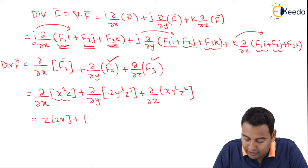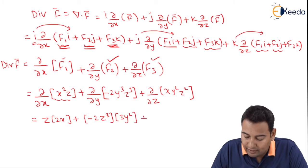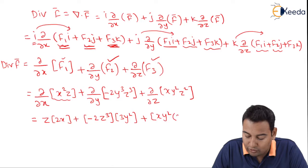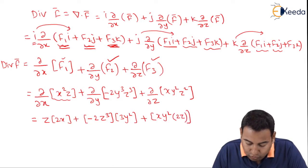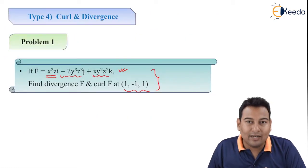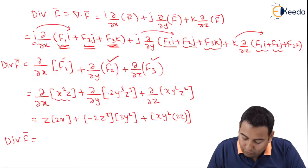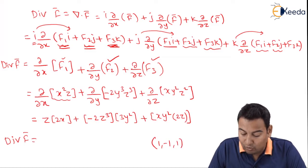Differentiating: with respect to x, z is constant, so x² derivative is 2x. With respect to y, minus 2z³ is constant, so y³ derivative is 3y², giving −6y²z³. With respect to z, xy² is constant, z² derivative is 2z, giving 2xyz². This is the divergence of f̄. Now I need to evaluate at the point (1, −1, 1).